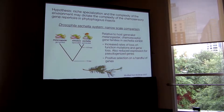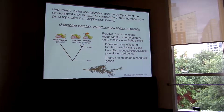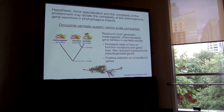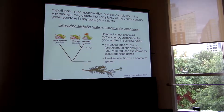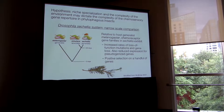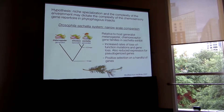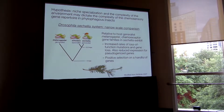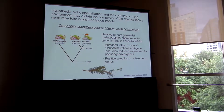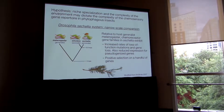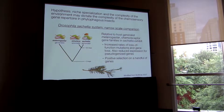However, there are at least two caveats of the system. The first is that Sechellia is an island endemic, so we don't know if these patterns are due to selection or a bottleneck. The second caveat is that Drosophila flies are not true insect herbivores, so we don't know for sure if these conclusions actually apply outside of the system.